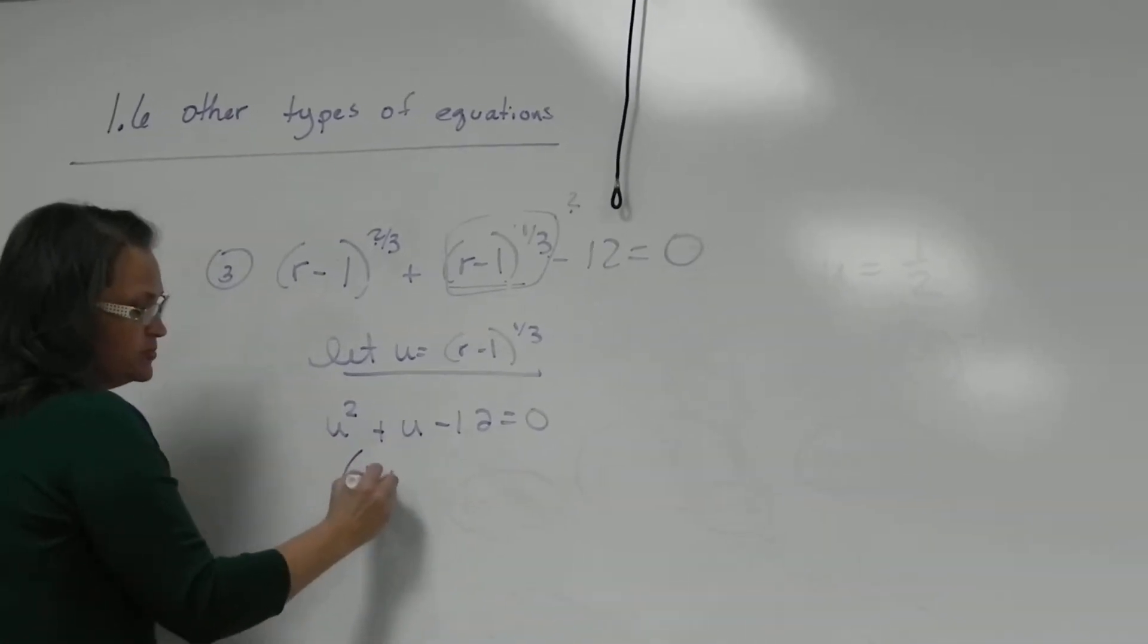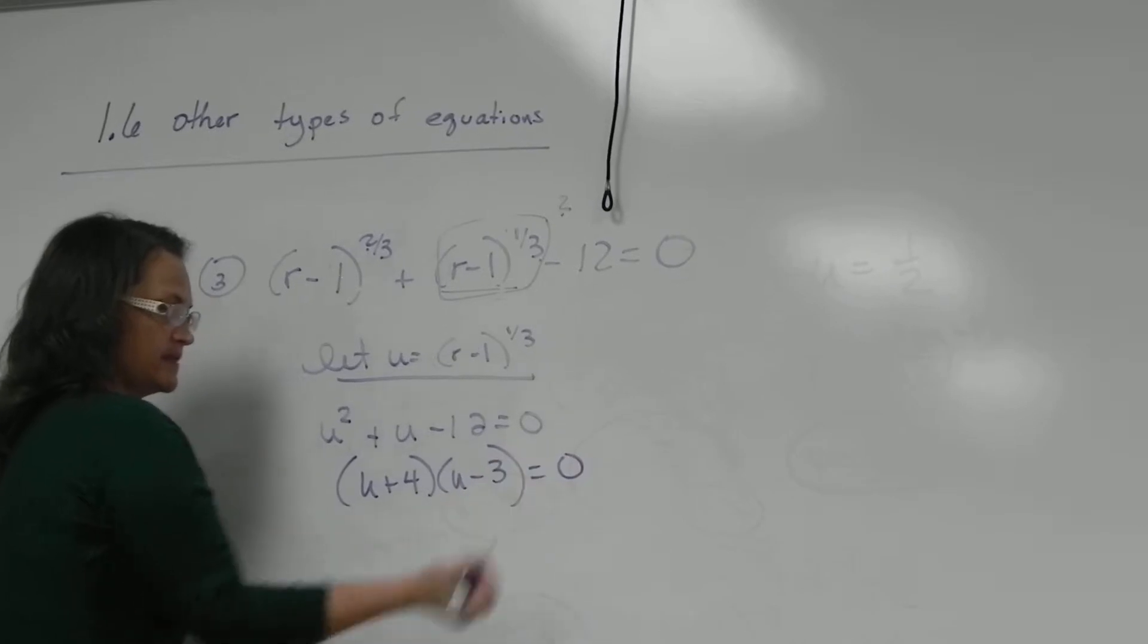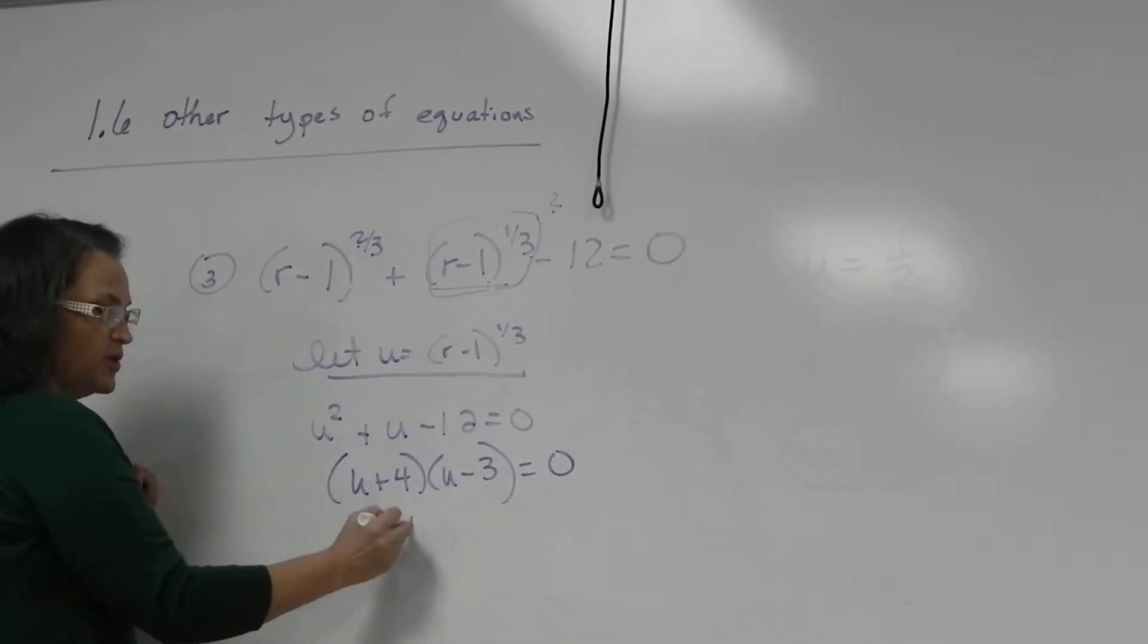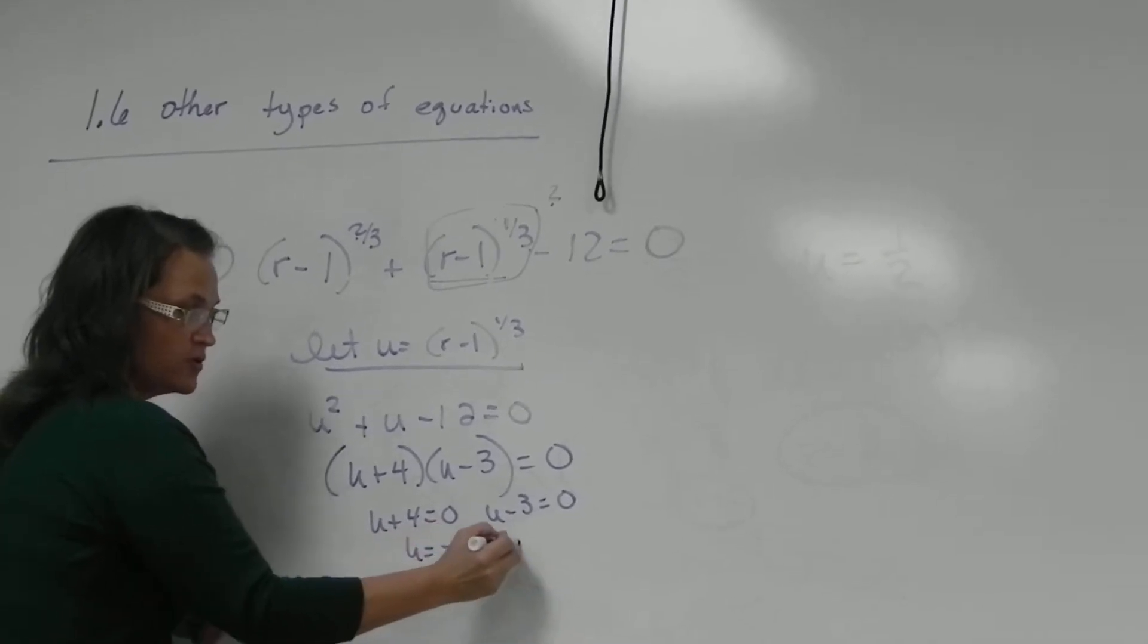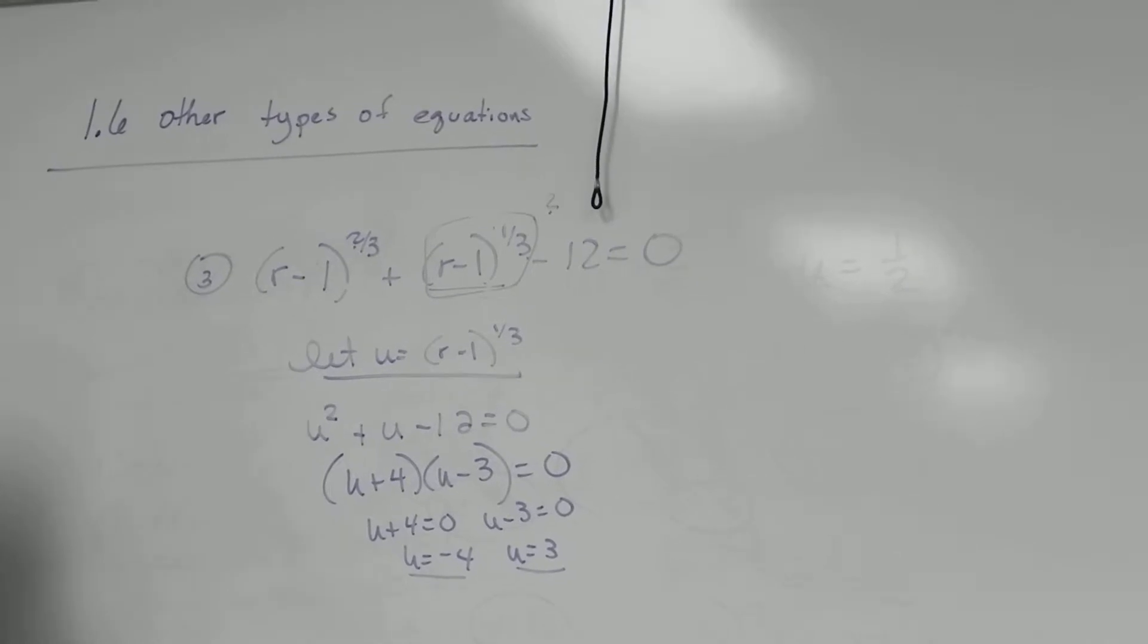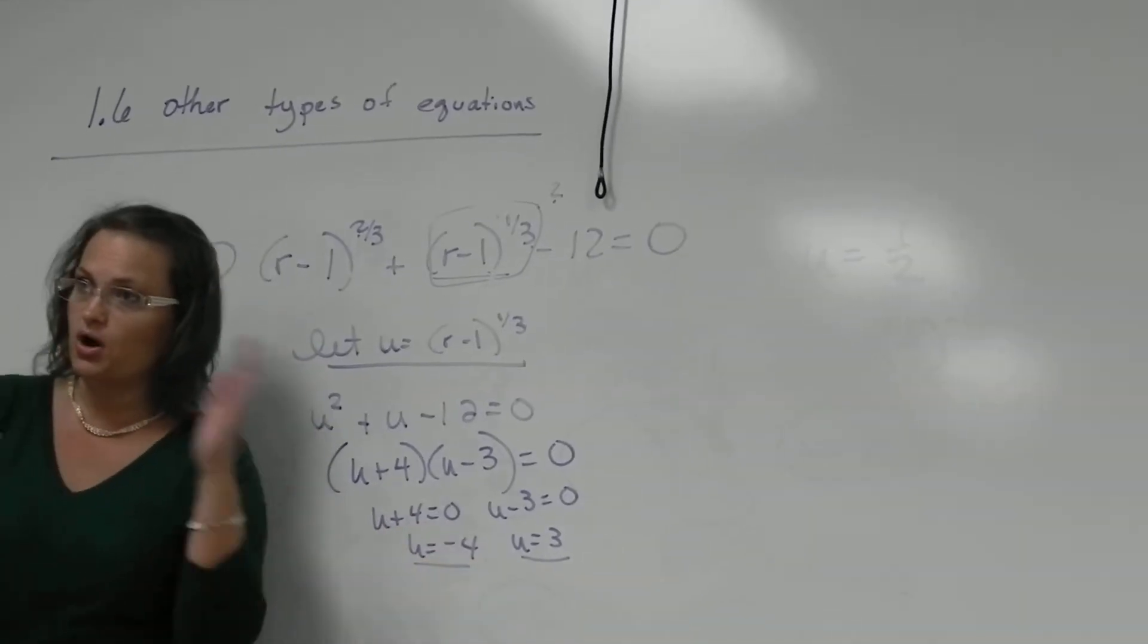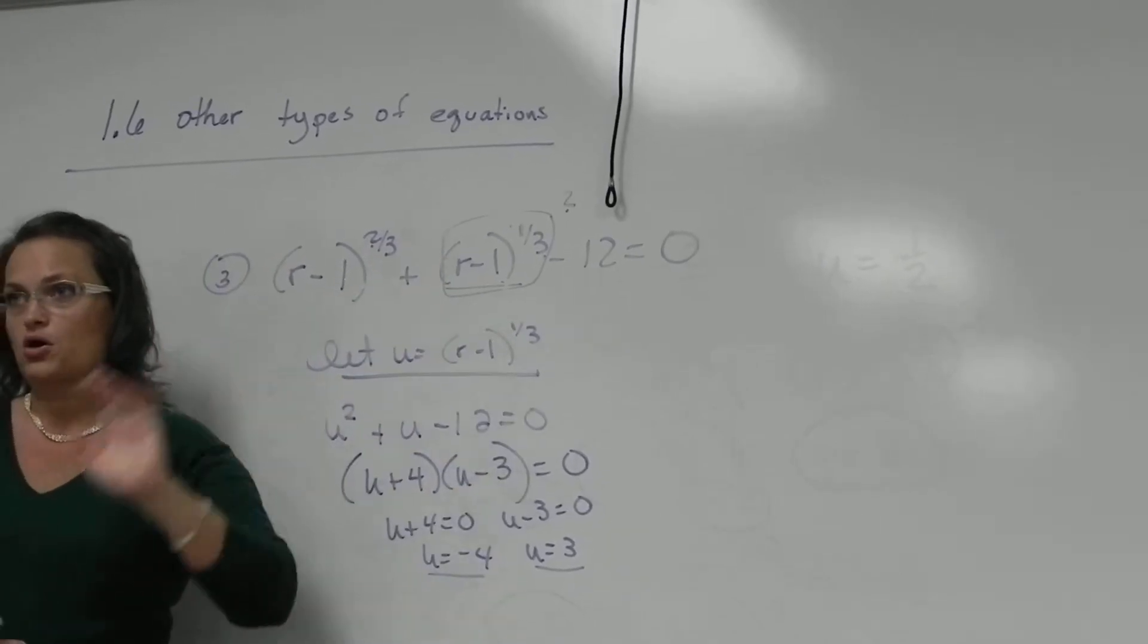Then this factors into (u+4)(u-3). Then you set each part equal to 0. When you solve each part, we have a negative 4 and a positive 3. Remember those are just your substituted u answers, so always remember, don't stop at the u answers. Always get the variable that was in the real problem, r.